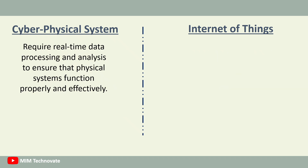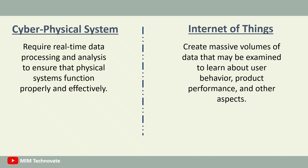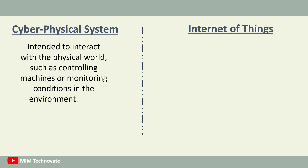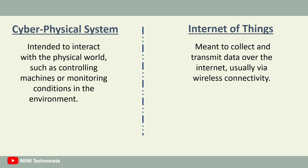Cyber-physical systems require real-time data processing and analysis to ensure that physical systems function properly and effectively, whereas Internet of Things devices create massive volumes of data that may be examined to learn about user behavior, product performance, and other aspects. Cyber-physical systems are intended to interact with the physical world, such as controlling machines or monitoring conditions in the environment, whereas Internet of Things devices are meant to collect and transmit data over the Internet, usually via wireless connectivity.